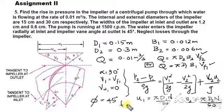So once you find, from the outlet velocity triangle, tan φ is equal to VF2 divided by u2 minus VW2. The established equation we have, you can find out VW2.